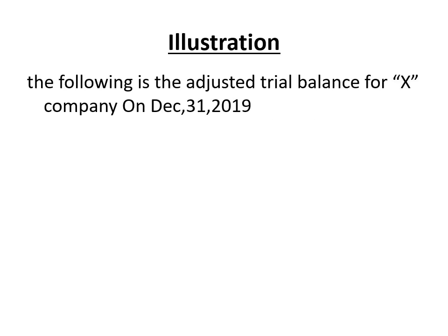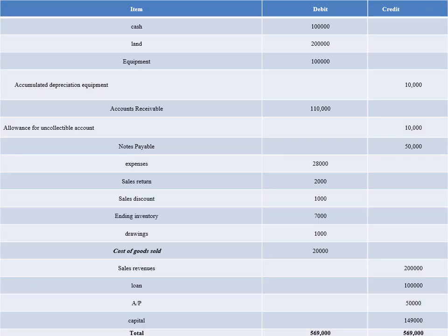At the end of the accounting period, the merchandiser will prepare an income statement and balance sheet. Here you have an illustration showing how to prepare these from an adjusted trial balance. Given this adjusted trial balance, it includes all the items to be used in preparing the income statement and the balance sheet. This will be your given exercise.